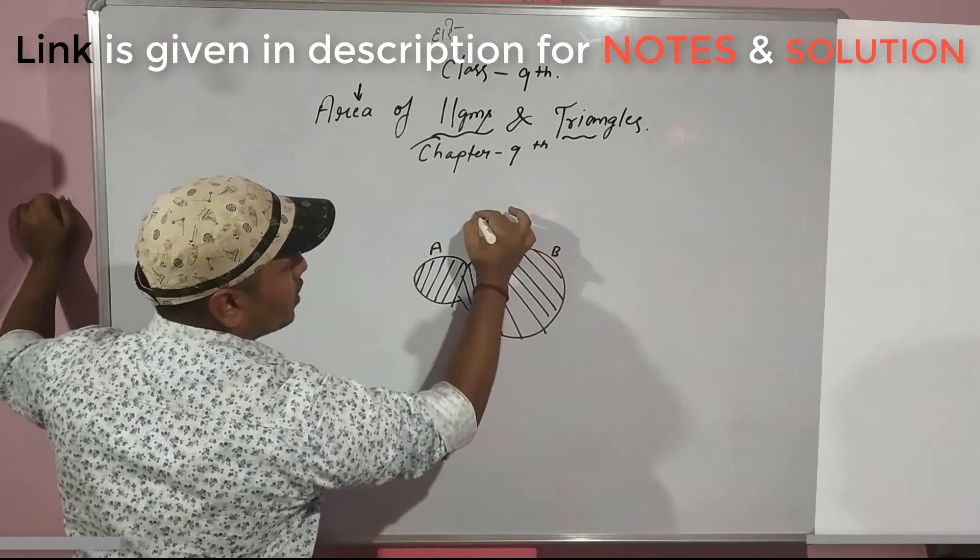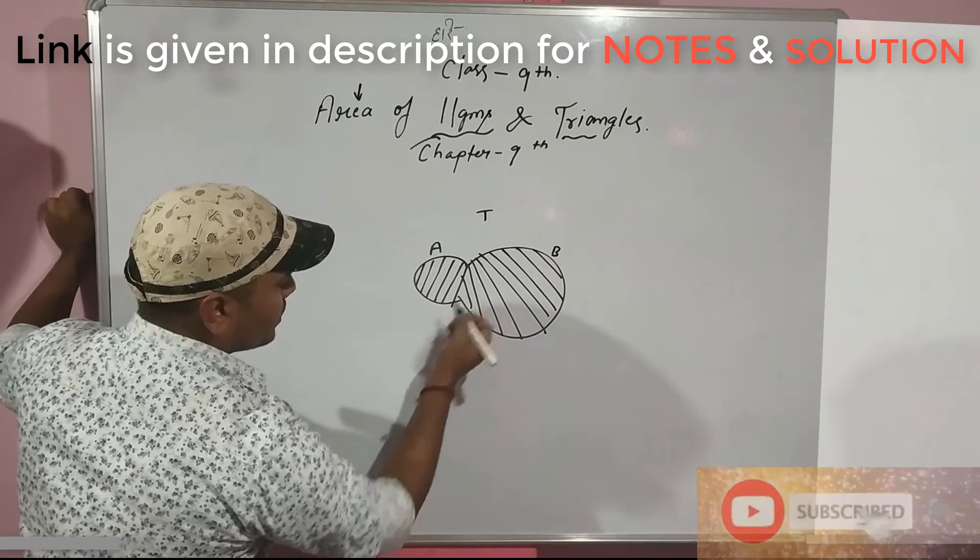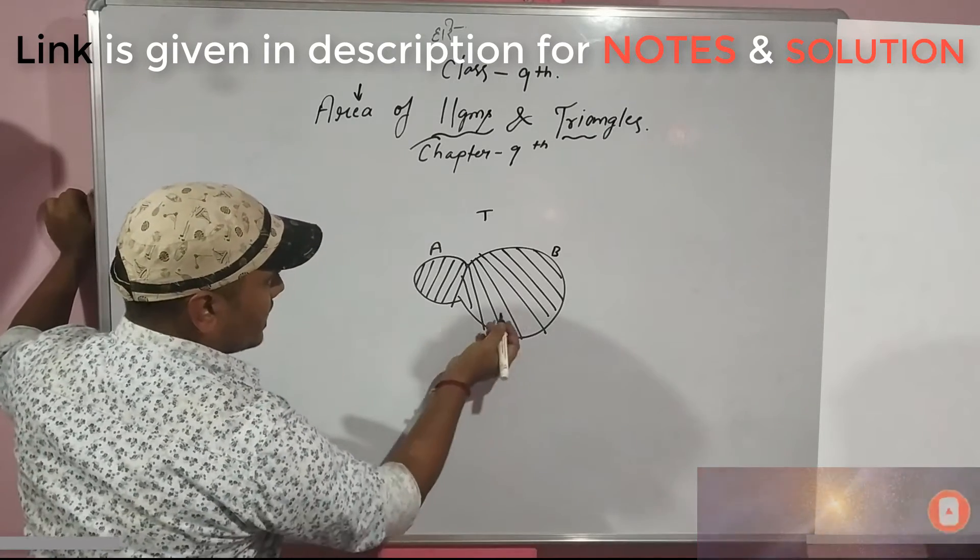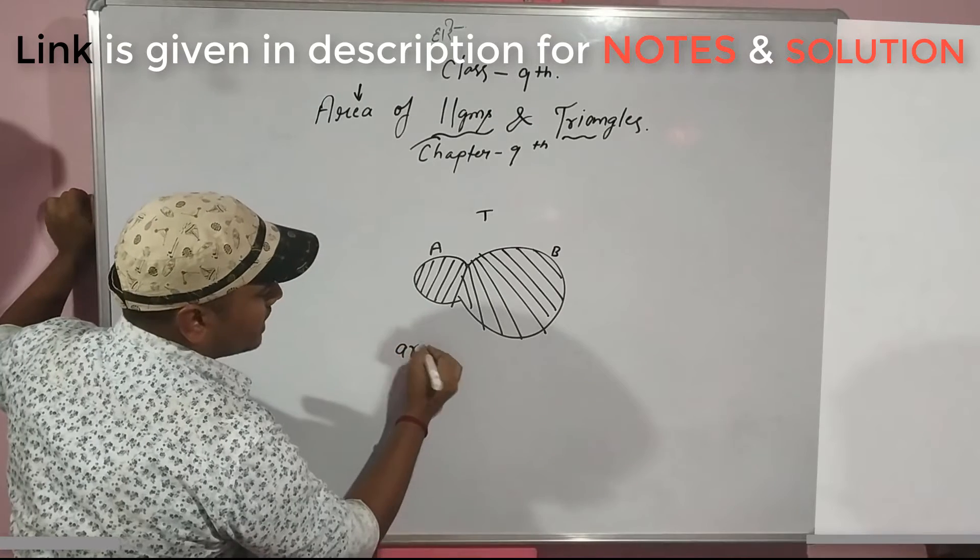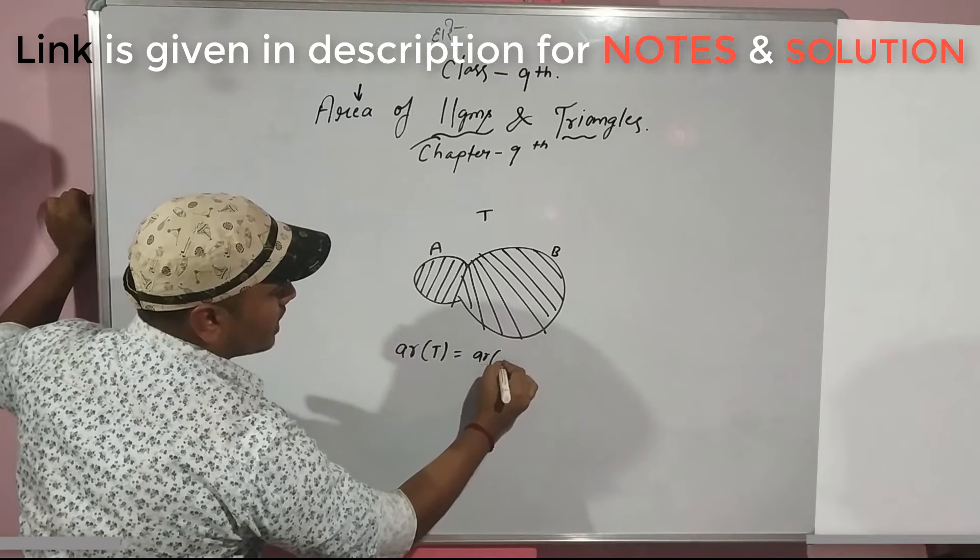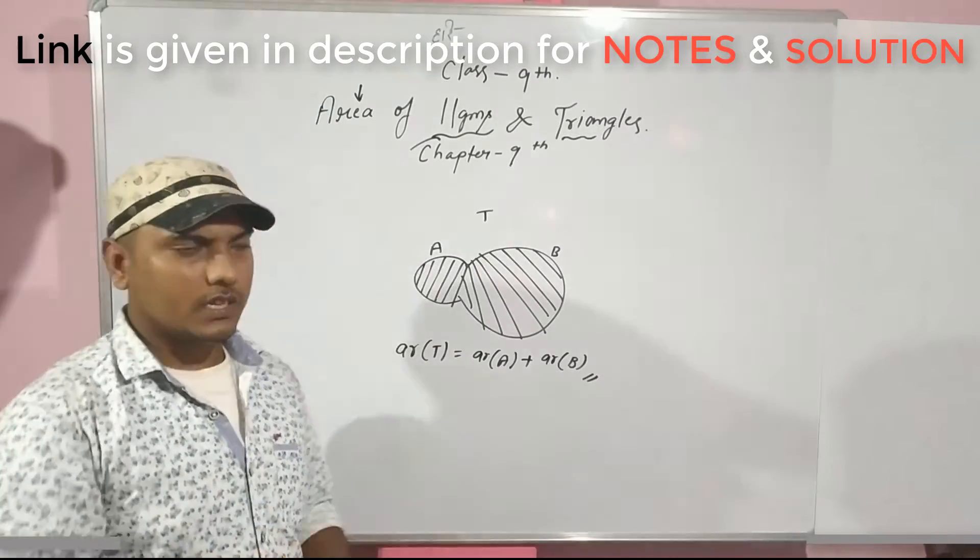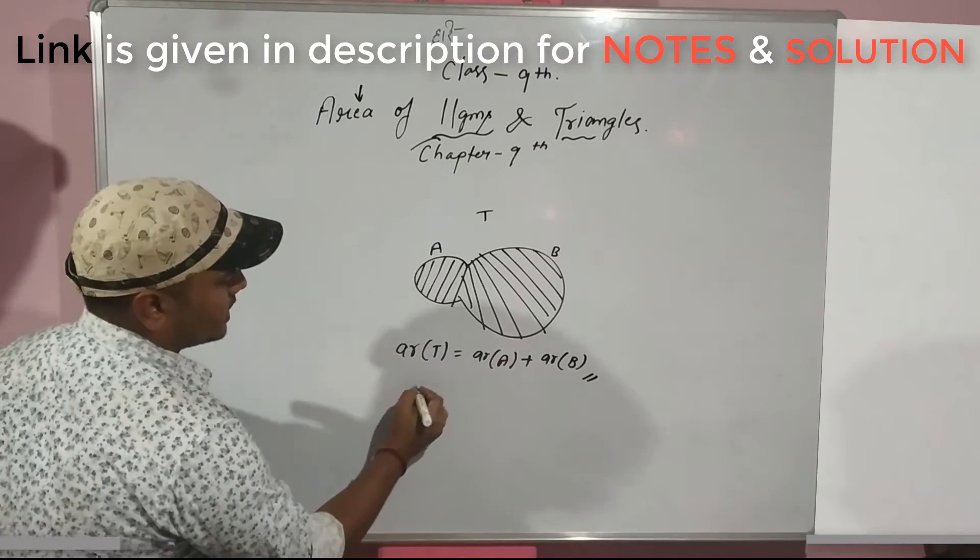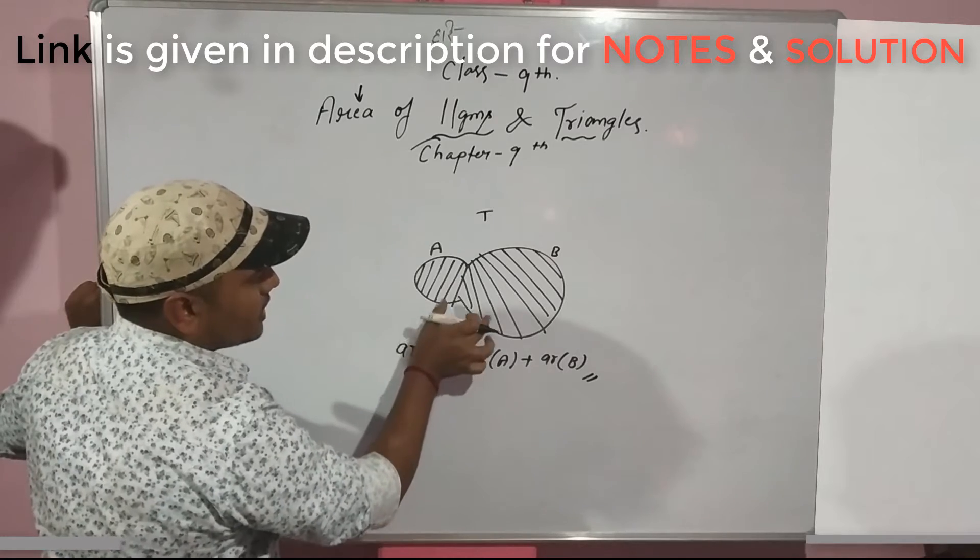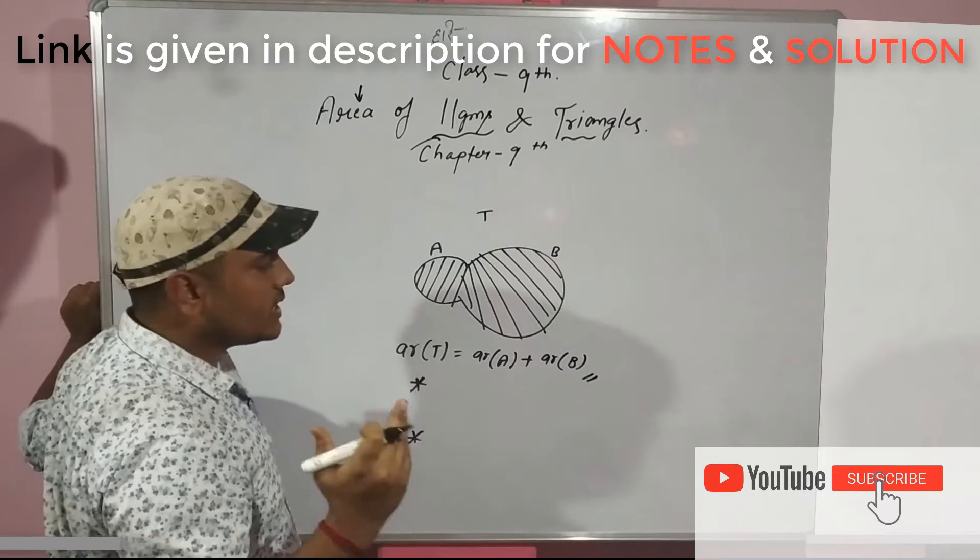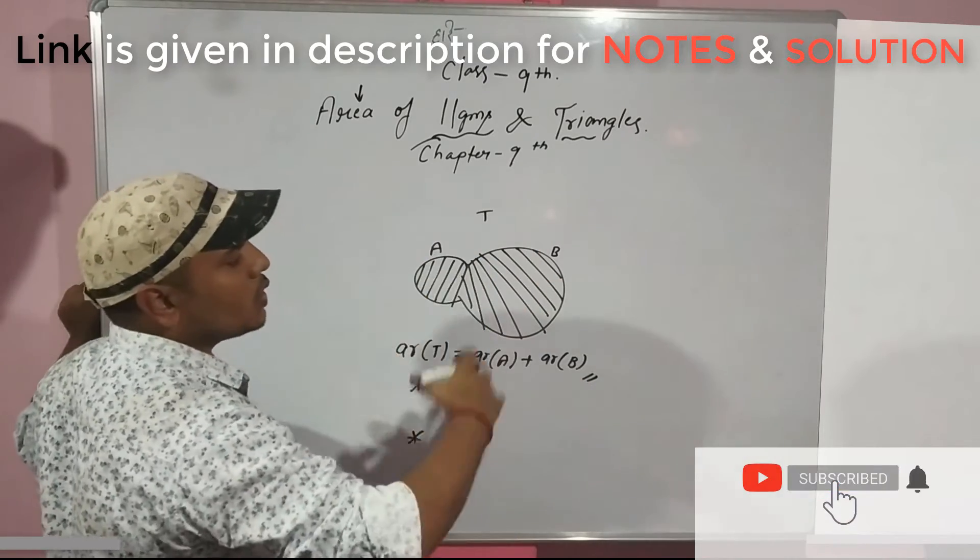If you have figures A, B, and T, where figure T is made up of two non-overlapping planar regions A and B, then the area of figure T is equal to the area of A plus the area of B.